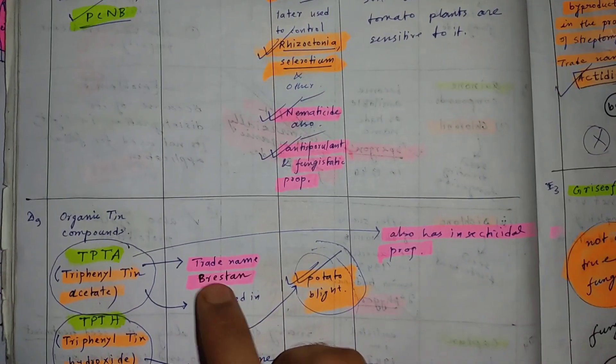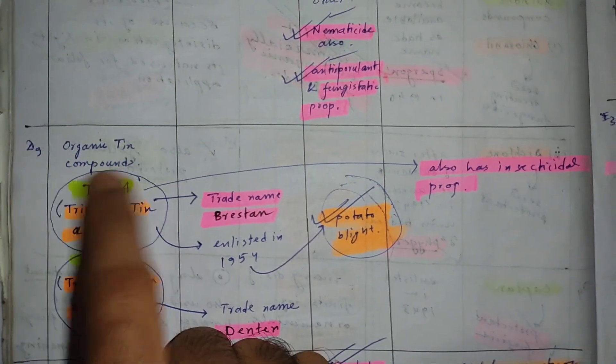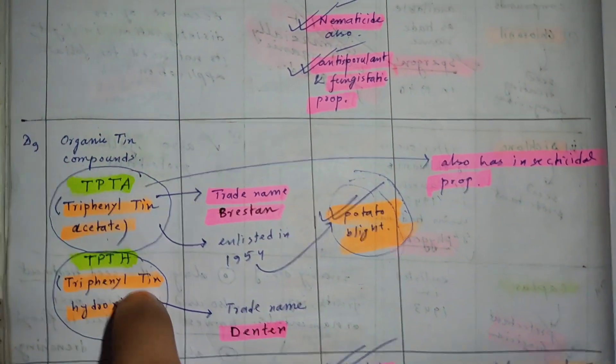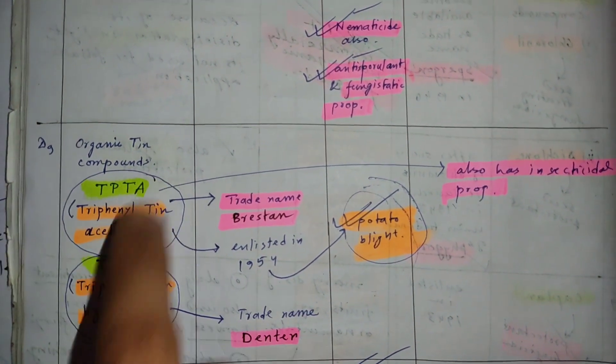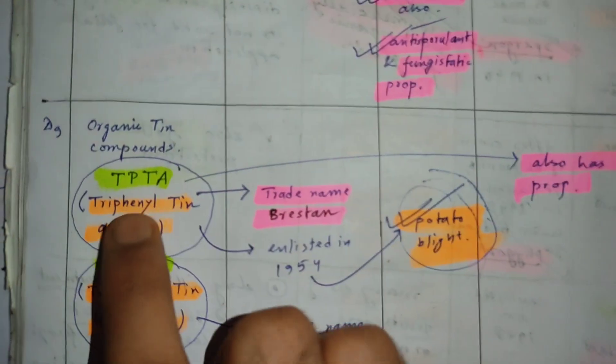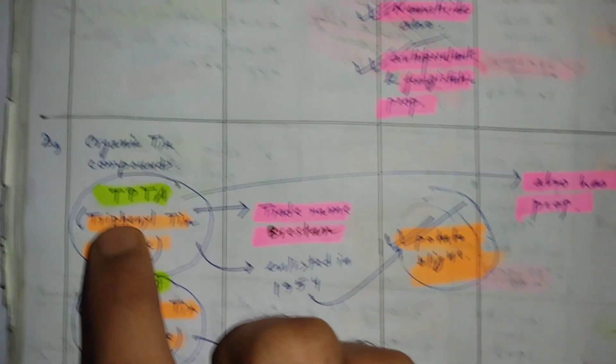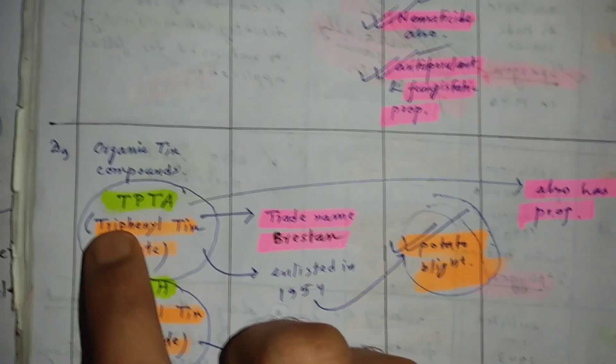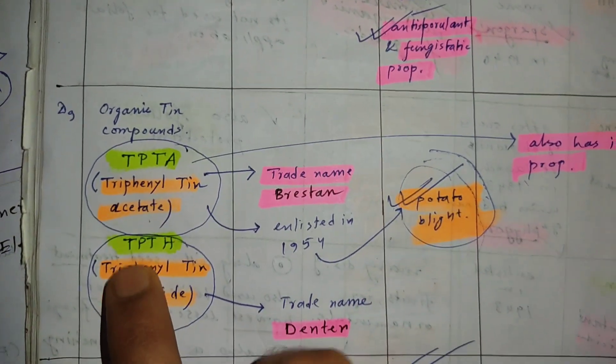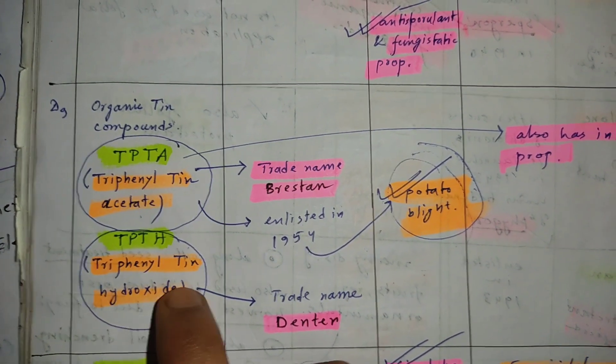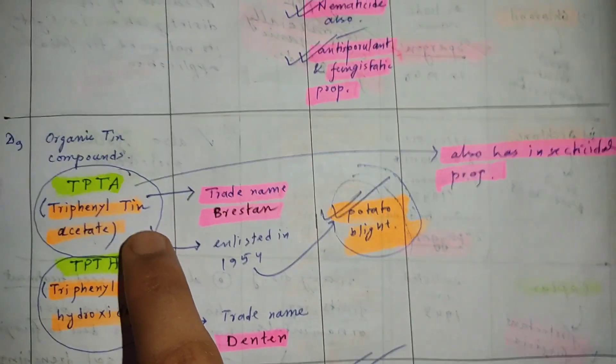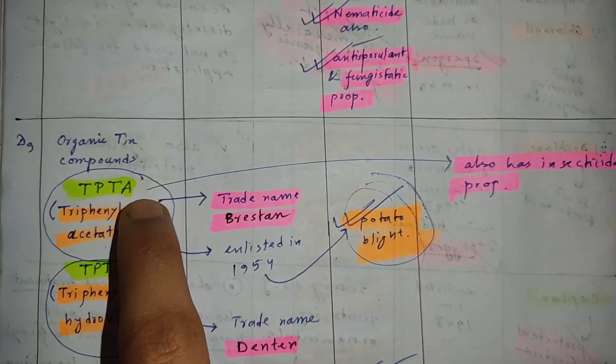The last one is the organic tin compounds. There are two main organic tin compounds: TPTA and TPTH. You can easily remember—TPTA is triphenyl tin acetate, and TPTH is triphenyl tin hydroxide. TPTA's trade name is Brestan, and TPTH's trade name is Duter.